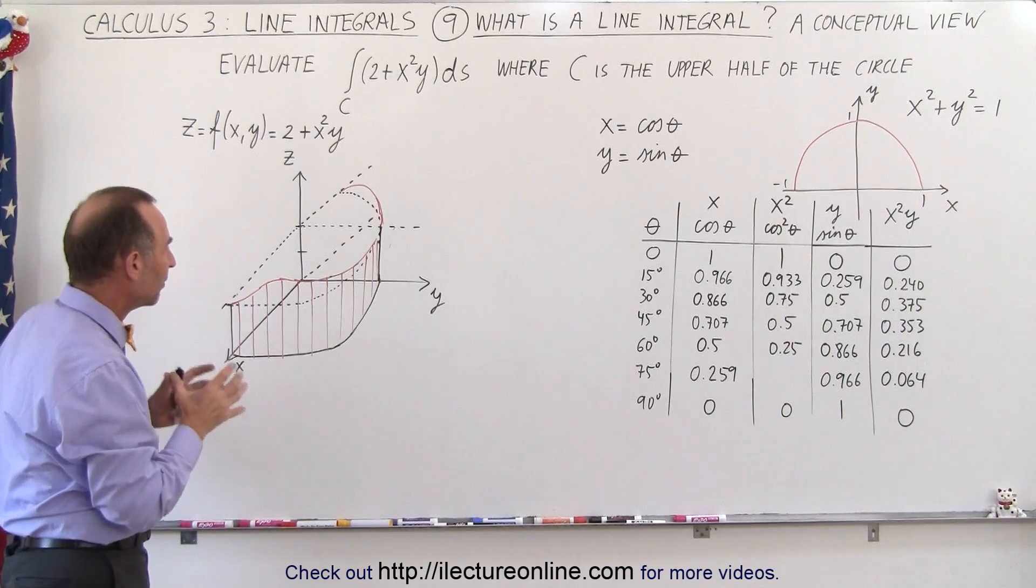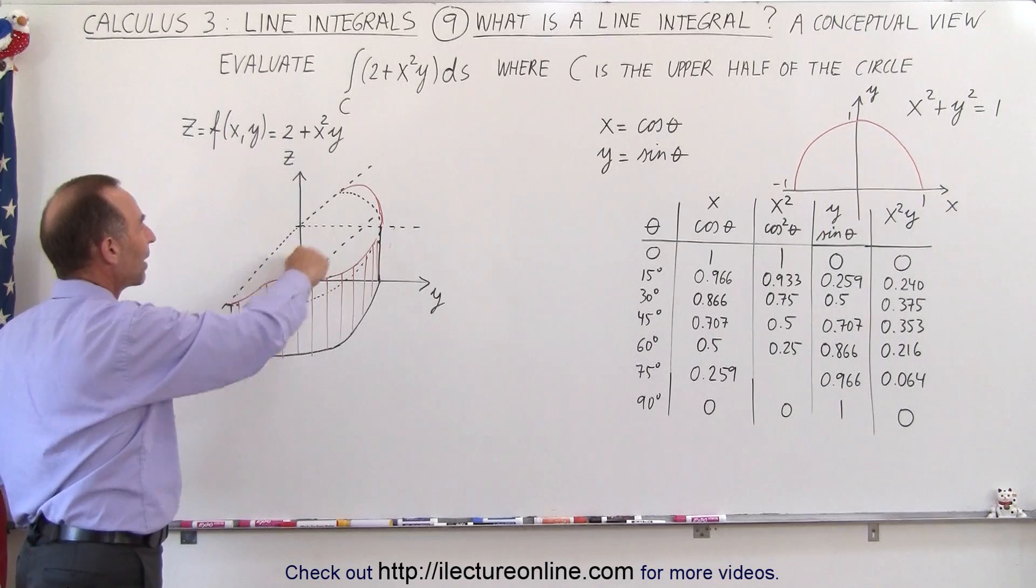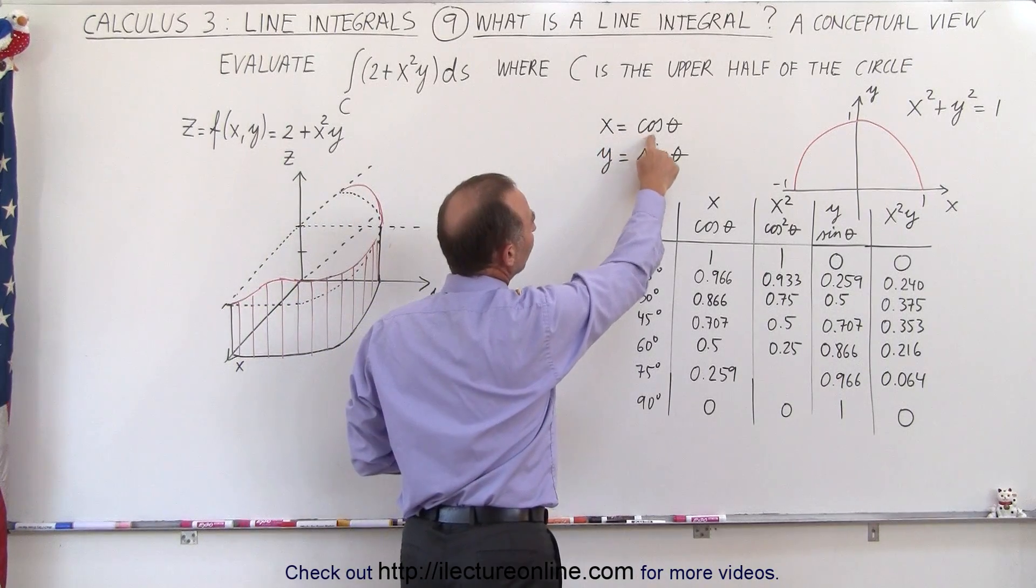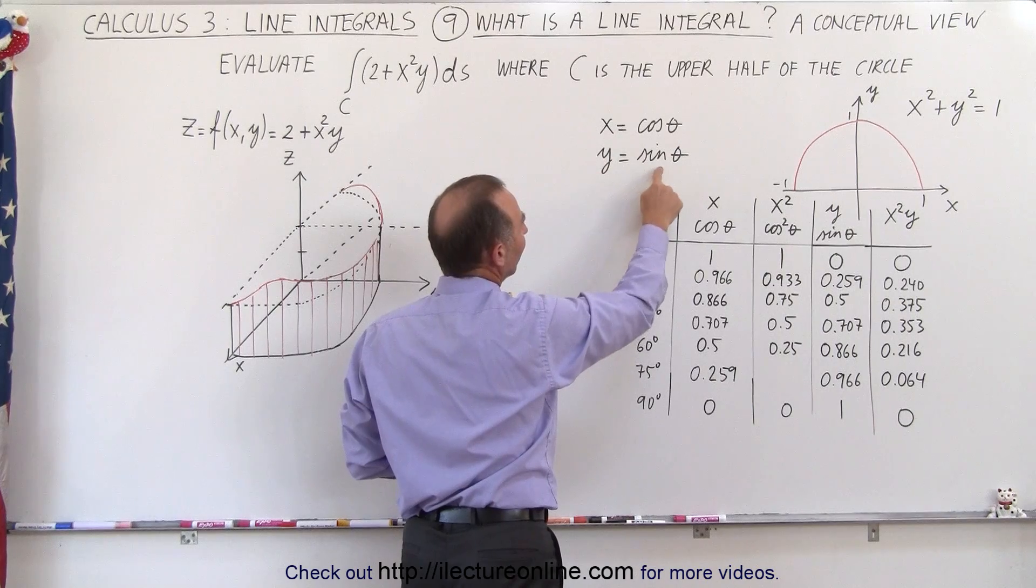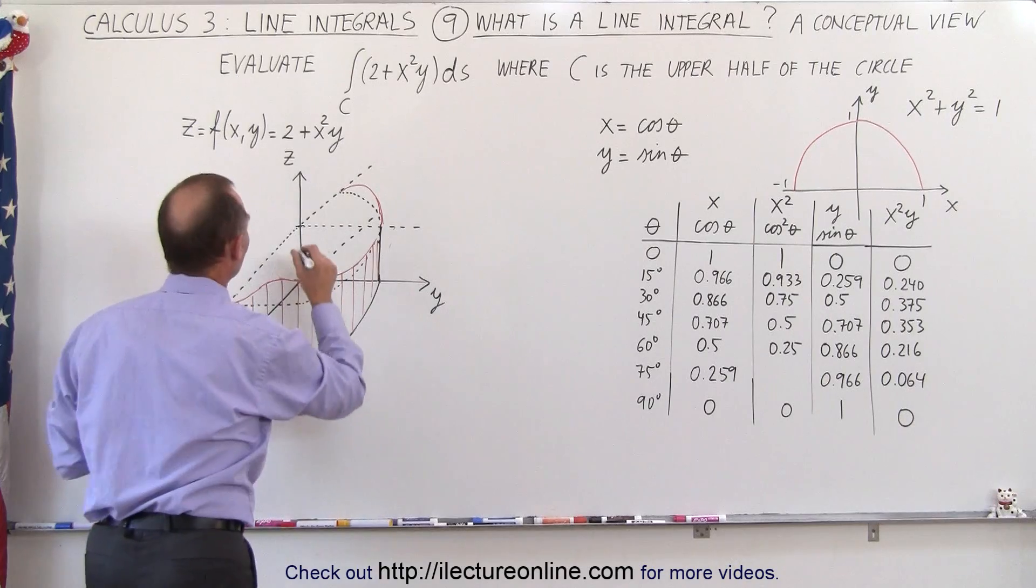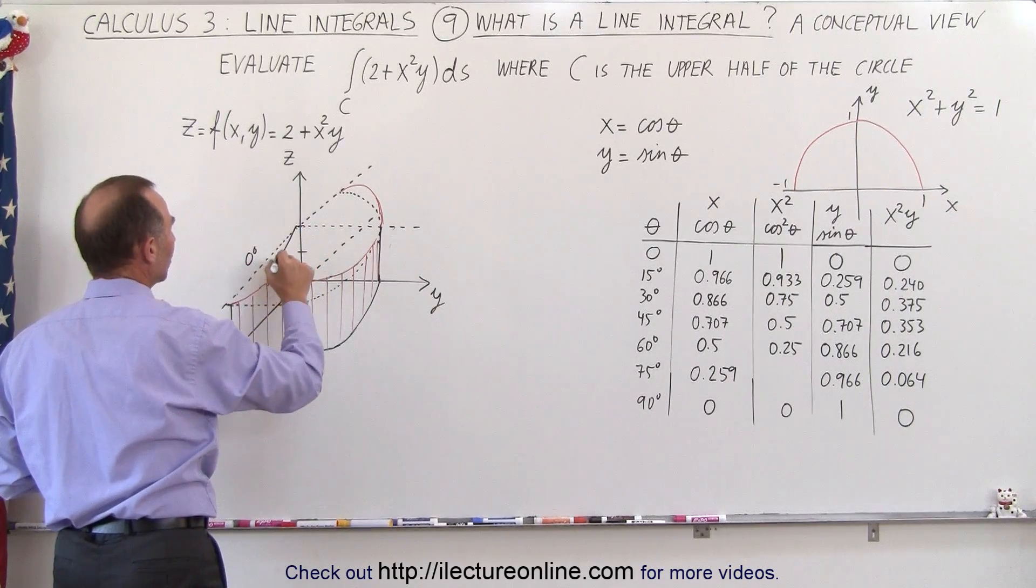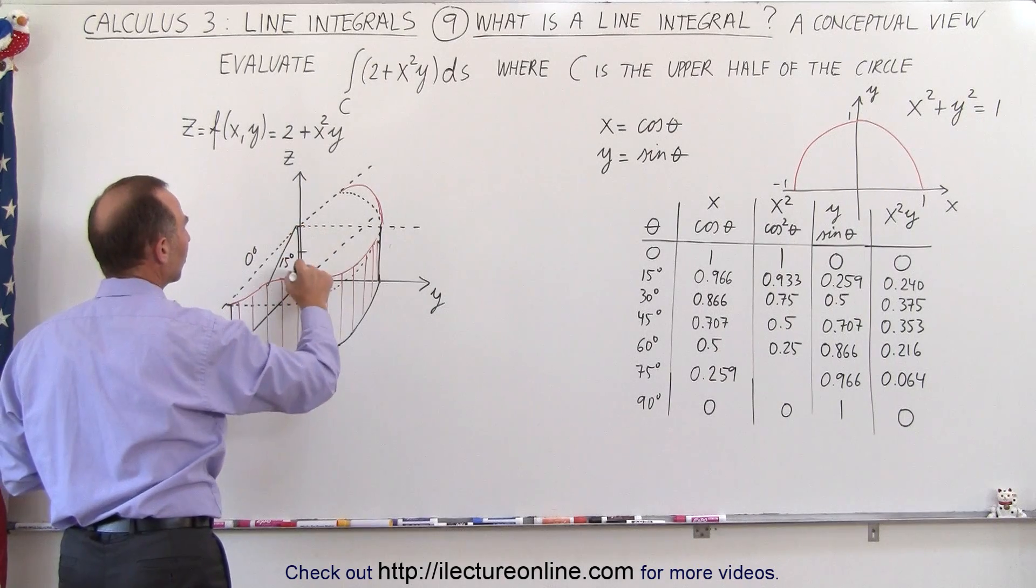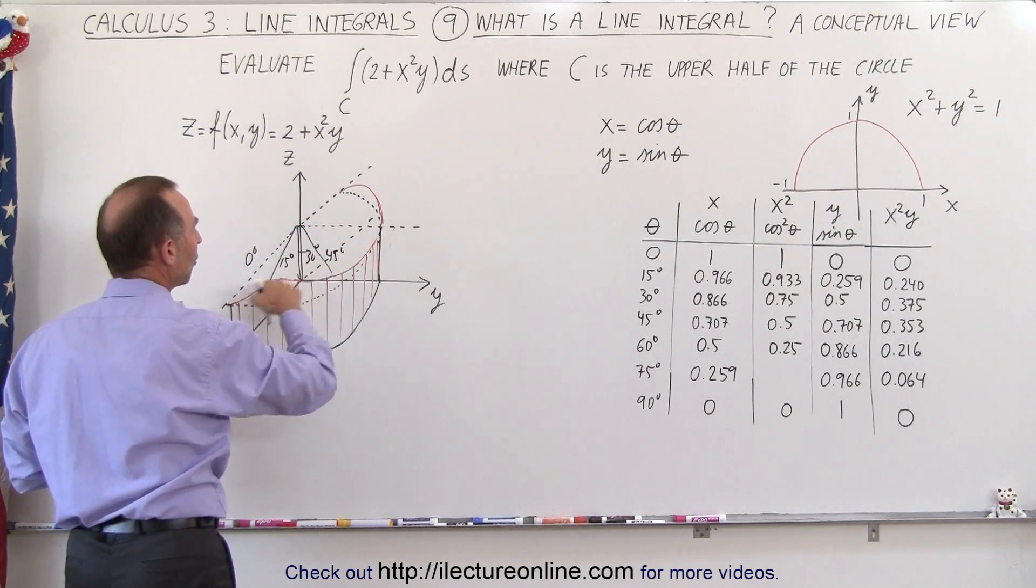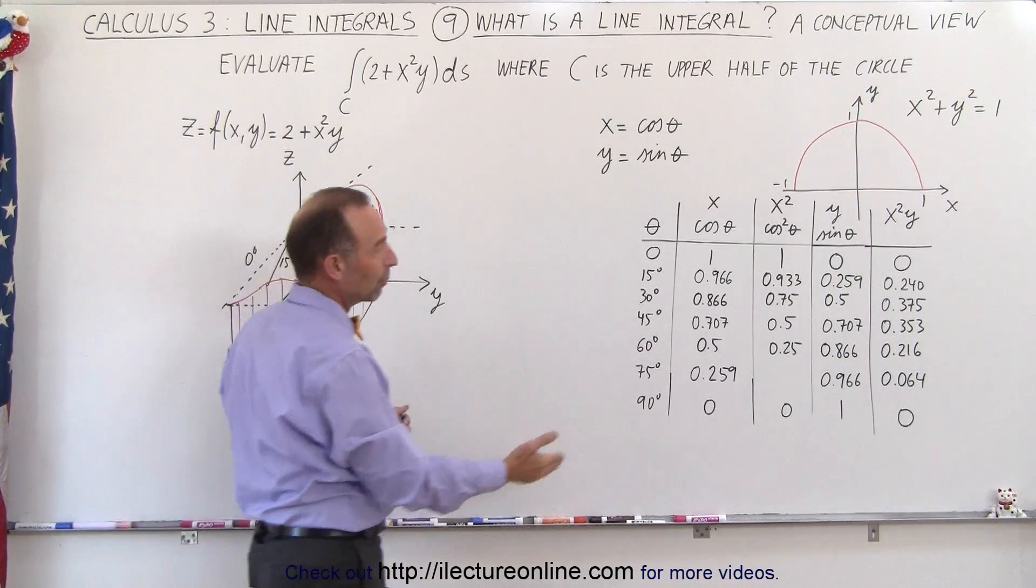If we're going to use the parametric equations where we can actually find the height based upon the angle, we can say x can be defined as the cosine of theta and y can be defined as the sine of theta. And then for various angles of theta, for example, in this case the angle would be 0 degrees, then here it would be 15 degrees, then 30 degrees and 45 degrees and so forth. We can find the values of x and y in terms of theta and that's what we've done right here.